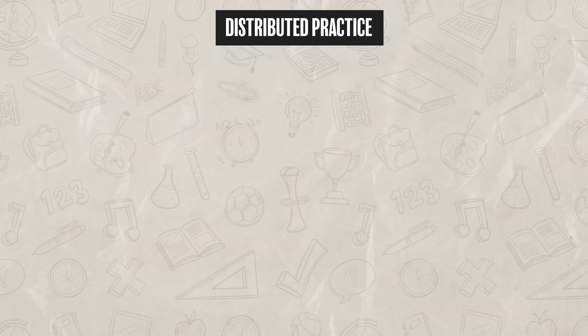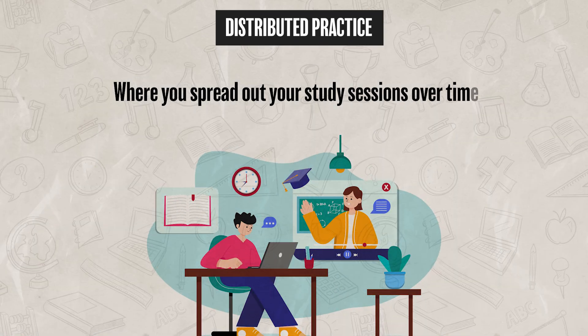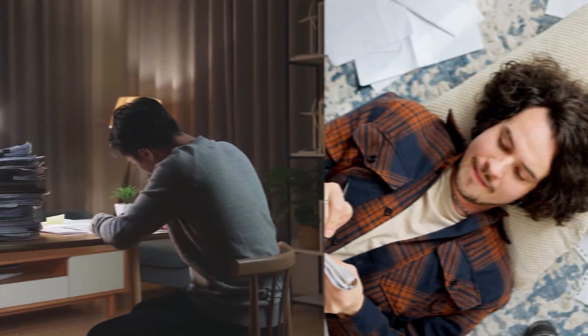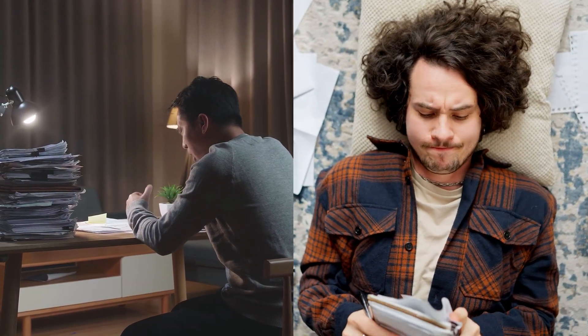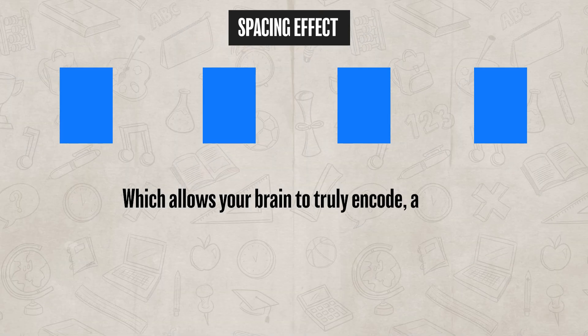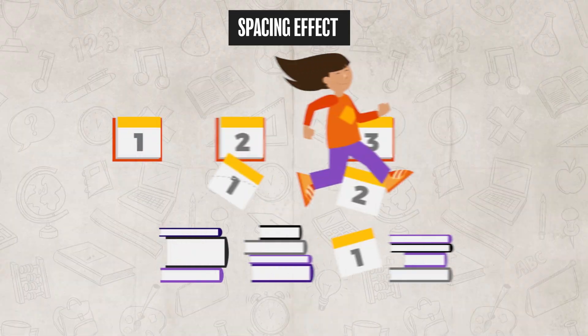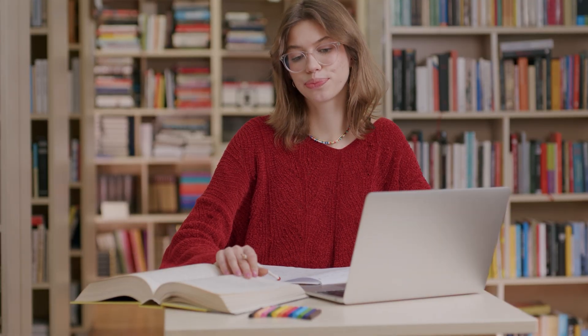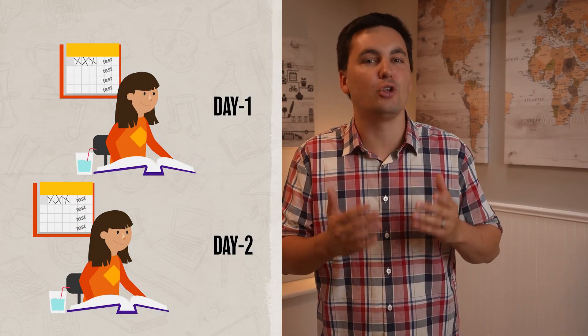If you really want to learn the information, you'll need to utilize distributed practice, where you space out your study sessions over time instead of cramming everything at once. Cramming often feels like it works in the moment because you can recall things right after a marathon study session, but this is actually just an illusion of learning — oftentimes the next day, most of what you thought you learned is already forgotten. With distributed practice, you get the advantage of the spacing effect, which allows your brain to truly encode and store the information, reinforcing what you know and identifying what you need to work on, ultimately leading to better long-term memory.